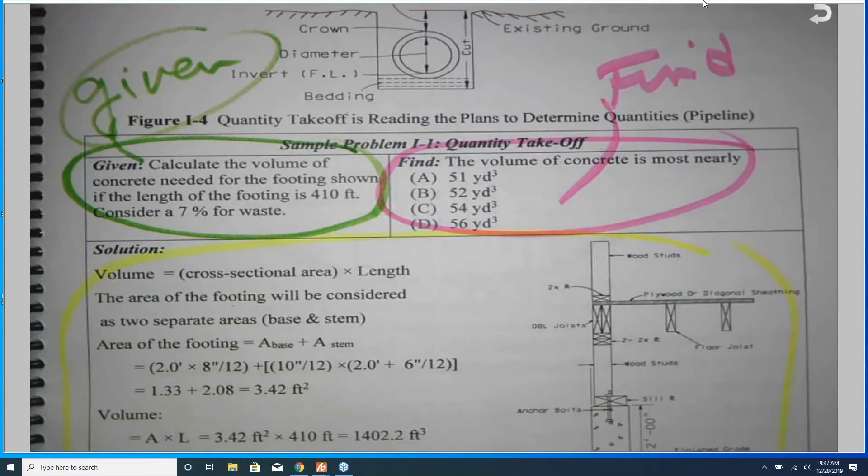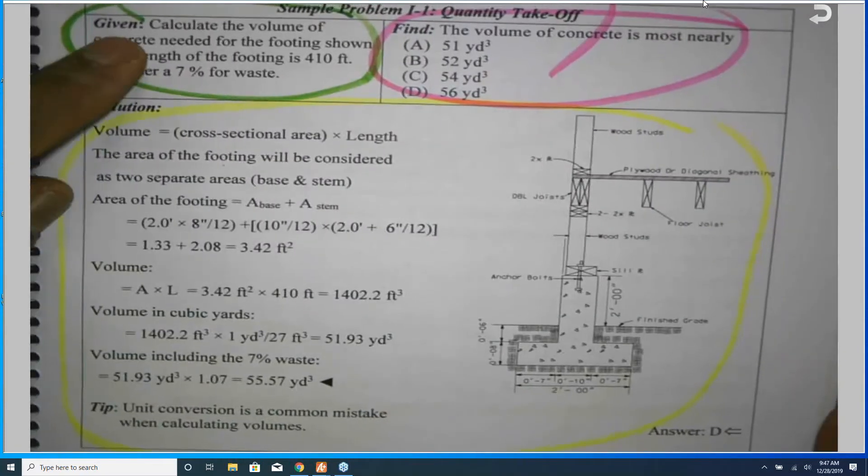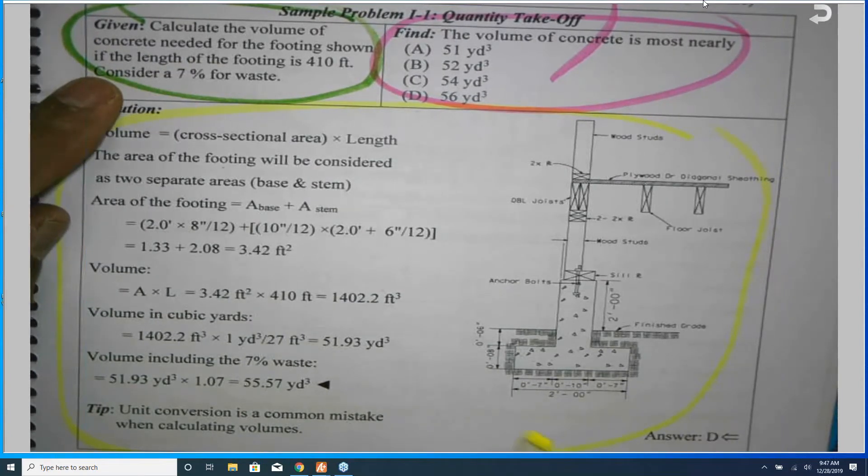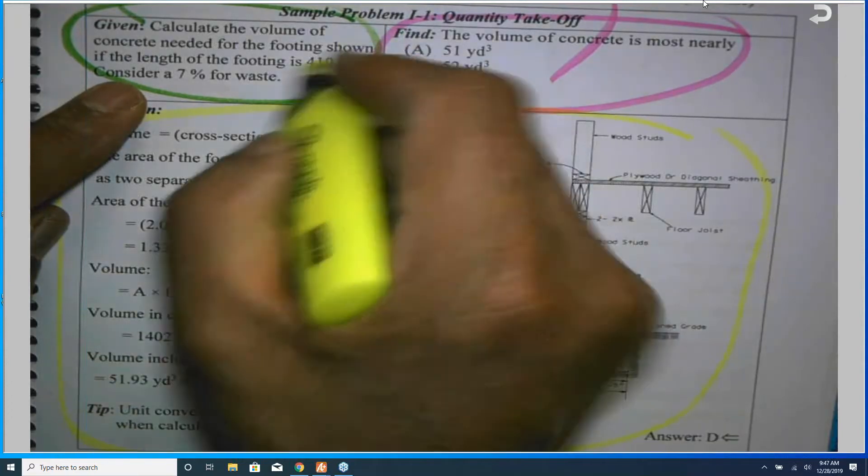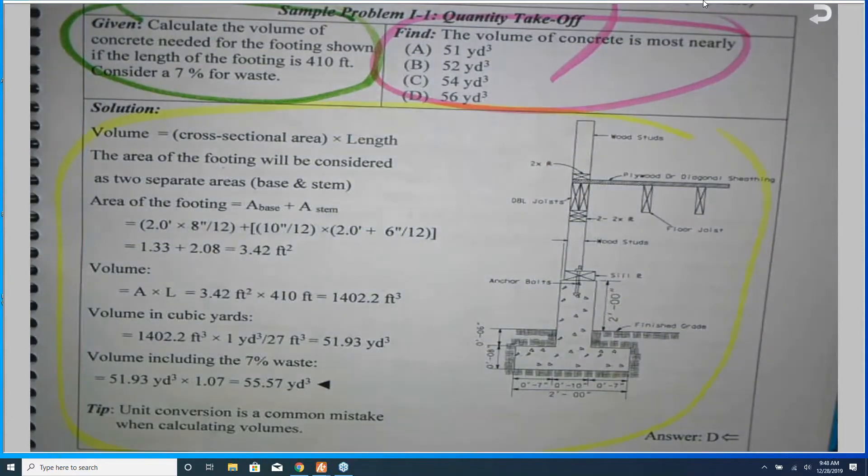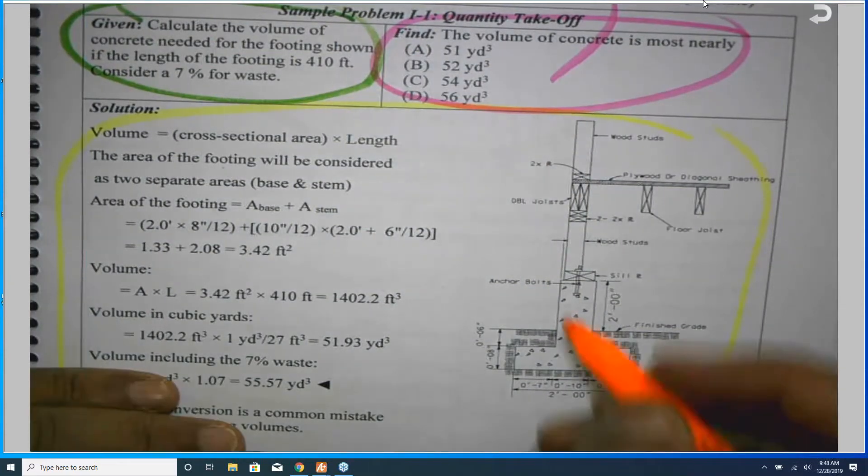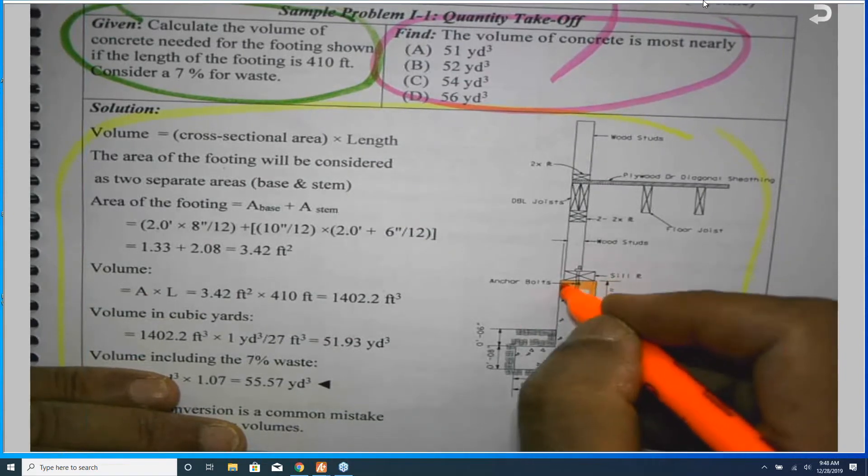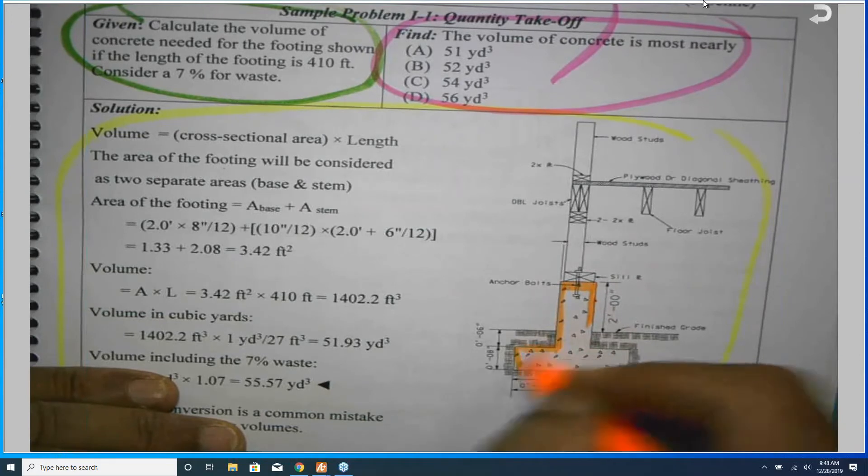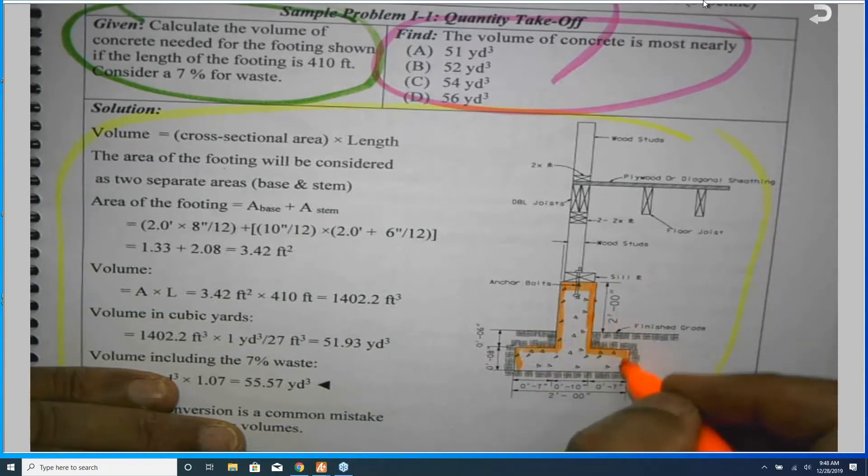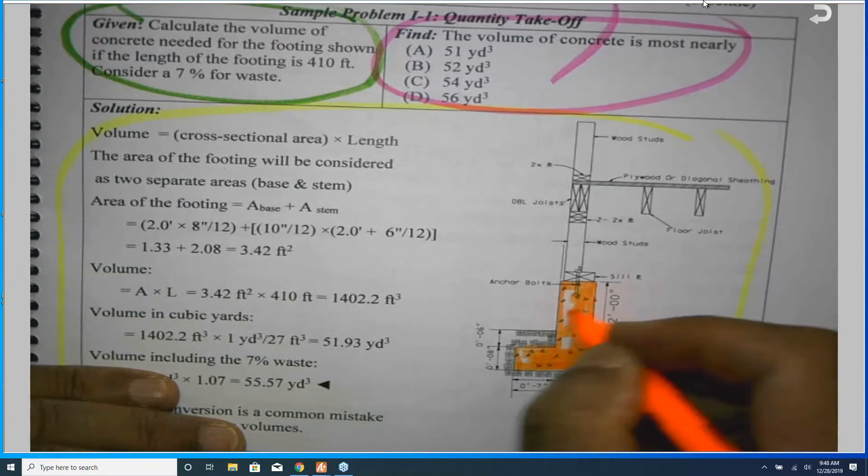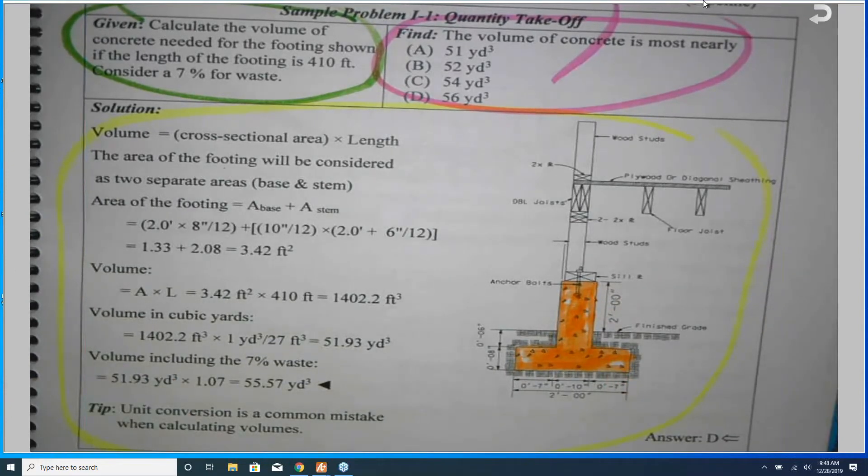So what is given here? He told you to calculate the volume of concrete needed for the footing shown here, if the length of the footing is given and consider waste. So he told you there is a footing here. I will color it for you - here it is, the concrete footing. I believe in coloring, I believe in writing notes. This is the footing that he is looking for.